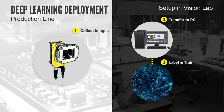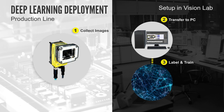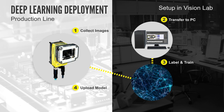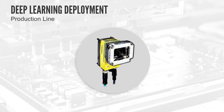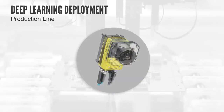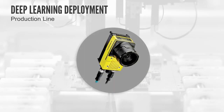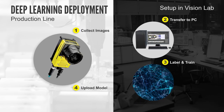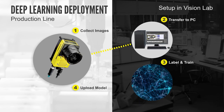Once that model is optimized and its performance matches the requirements, it is ready for production. At that point the model is transferred to the camera and deployed on the production line. Note however that if anything changes — such as the introduction of new products or the replacement of an illumination — the customer needs to go through that same process again.